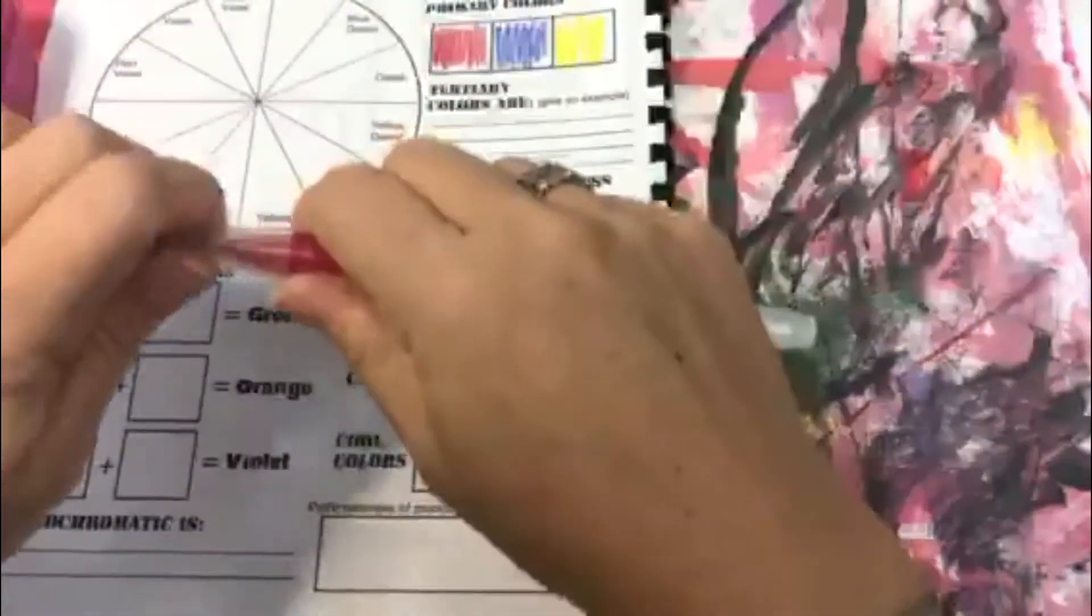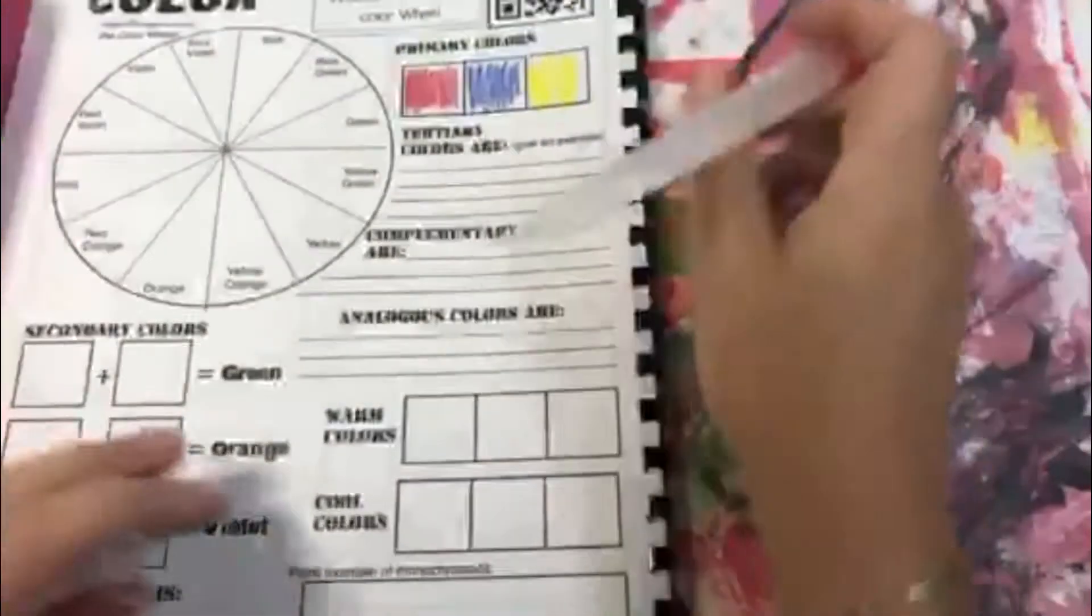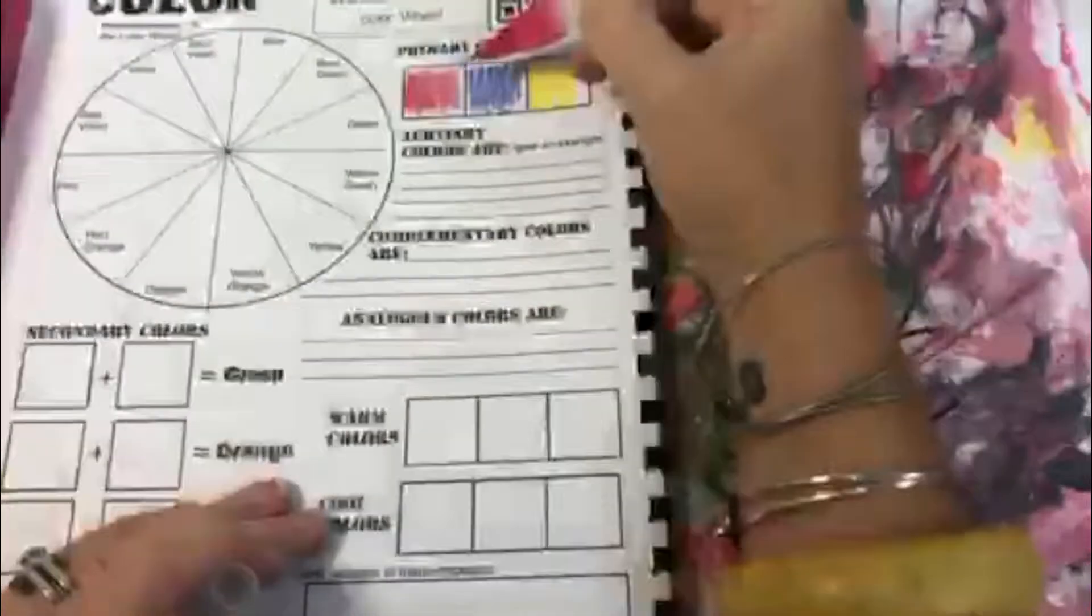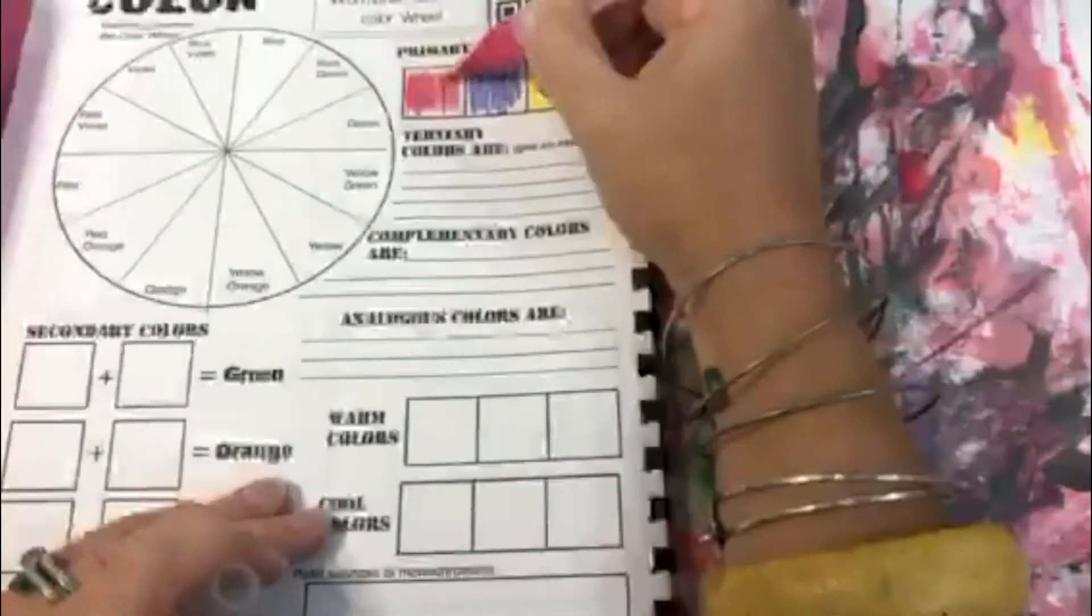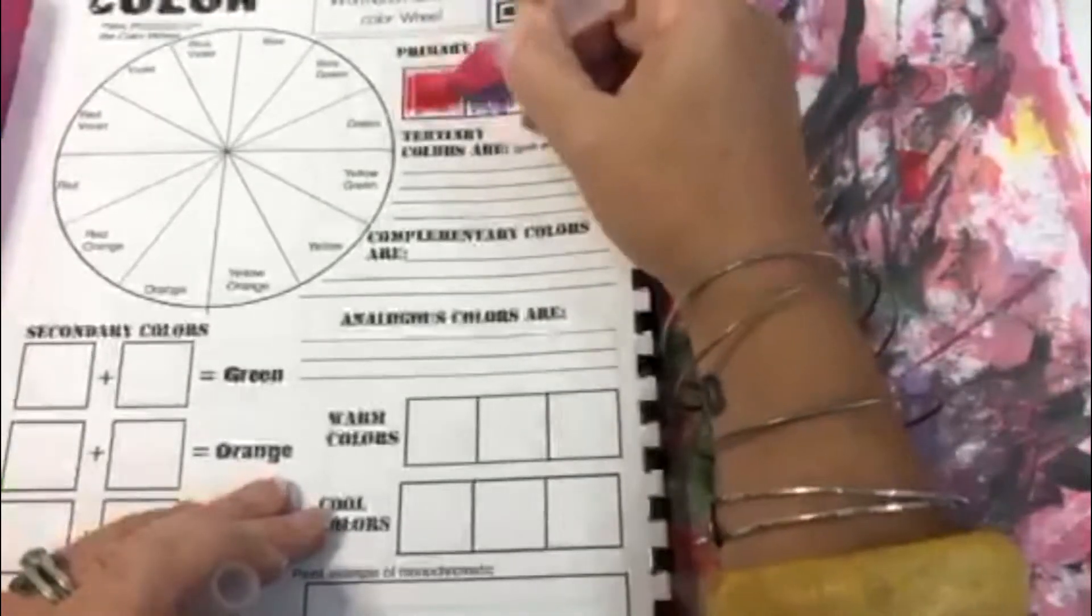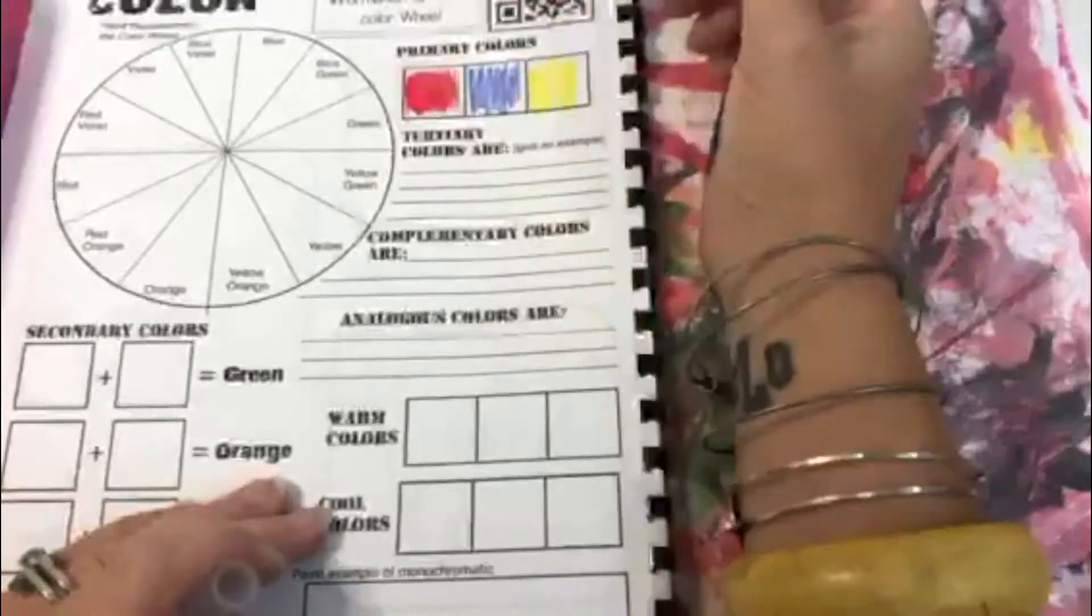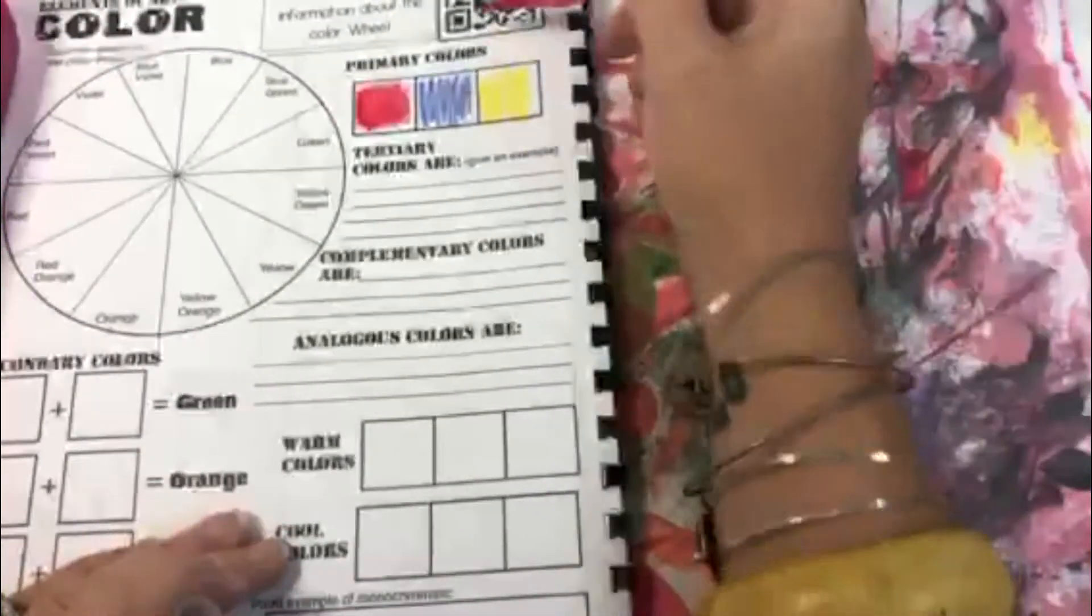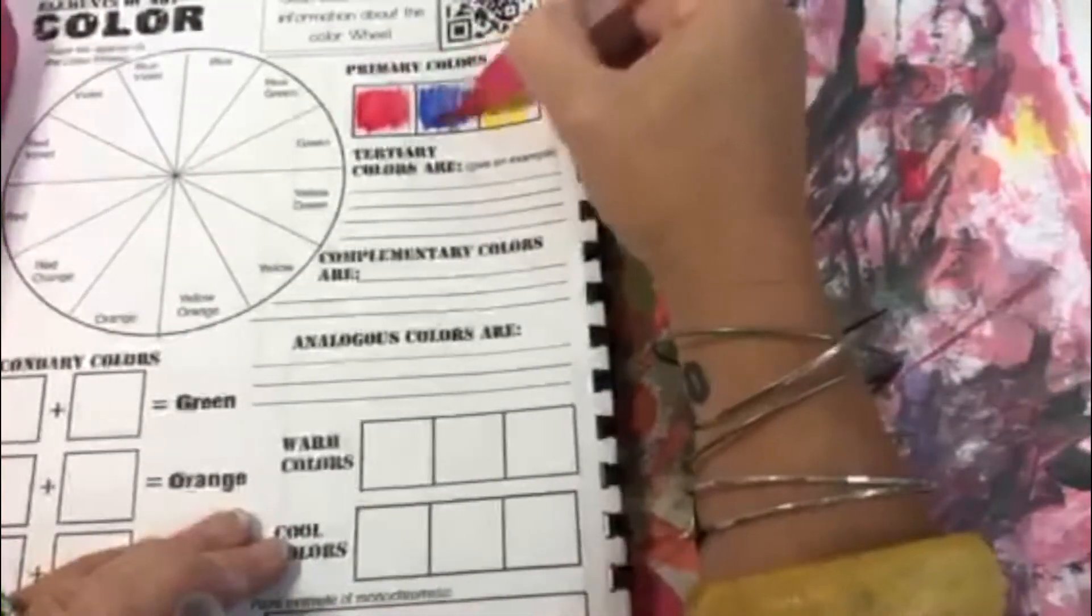So once you do that, again this is computer paper you gotta be real careful, and then you just push your fingers gently and water should start to come out. And these are new, no one's used them. See? And you rub it.